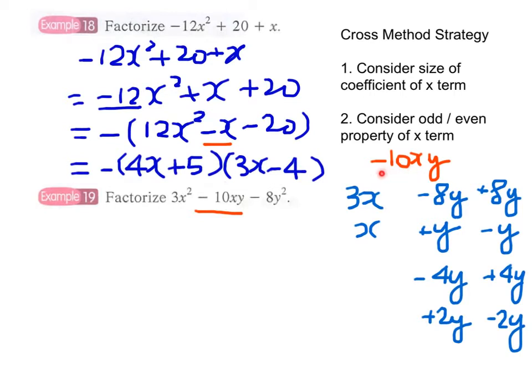The coefficient of the middle term is -10, which is quite large and also an even number. Looking at 3x², both 3 and 1 are odd numbers, while -10 is even.